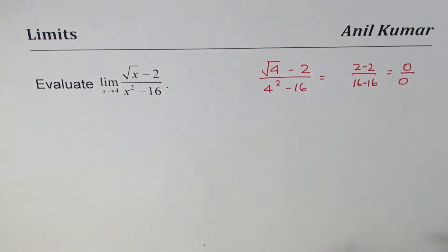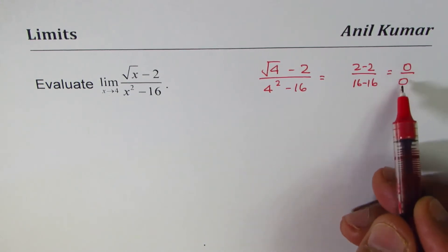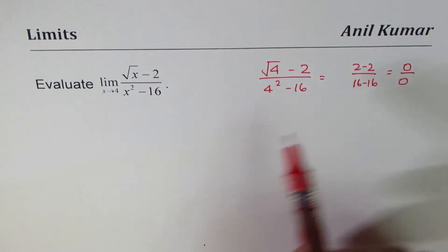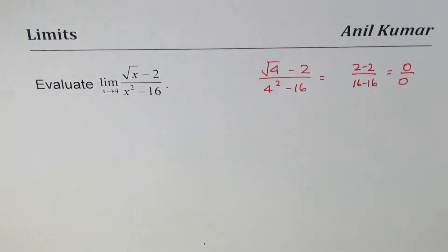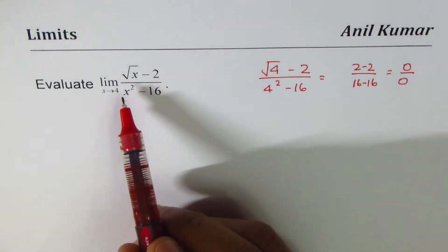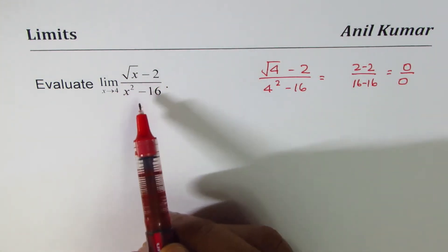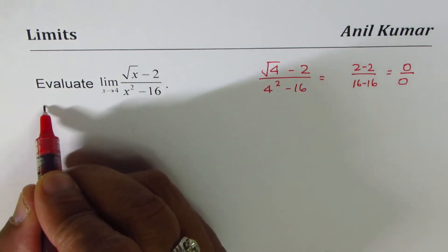So we have indeterminate form, and whenever we have indeterminate form there is a common factor in numerator and denominator which could be cancelled out. So different techniques are used. In this particular case, since we have square root function in the numerator, we will rationalize the numerator.